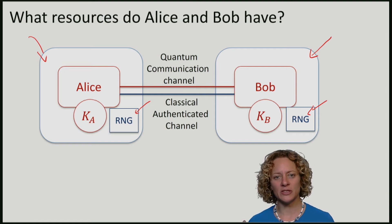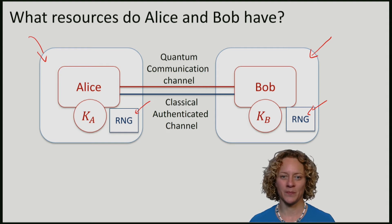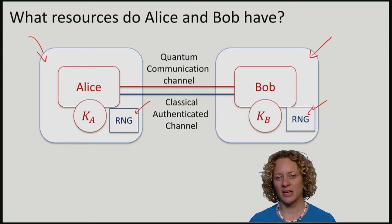They can send classical bits to each other over the channel. Eve knows these bits, but Alice and Bob can be sure that the bits really came from the other party. We will later take this condition away and explain how Alice and Bob can create a classical authenticated channel.